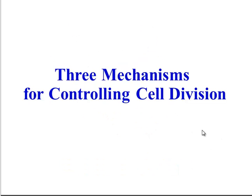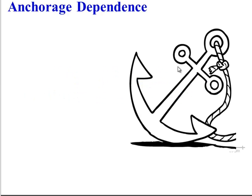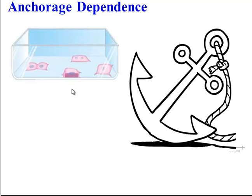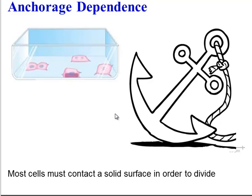There are three main mechanisms for controlling cell division. The first mechanism is anchorage dependence. In other words, cells need to be attached to a solid surface in most cases before they will divide. They must be anchored.